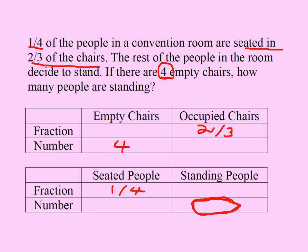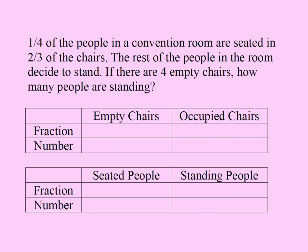Let's erase everything and start with a cleaner slide. Two-thirds of the chairs are occupied, one-fourth of the people are seated, and four of the chairs are empty. Now, if two-thirds of the chairs are occupied, then one-third of the chairs must be empty — because one-third plus two-thirds equals three-thirds, which represents all the chairs.